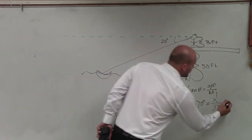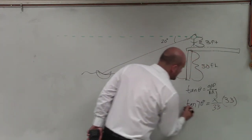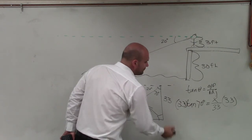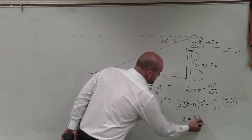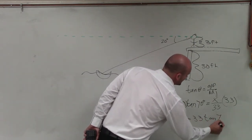Good. So therefore I'll multiply by 33 on both sides. Therefore, now I have x equals 33 times the tangent of 70 degrees.